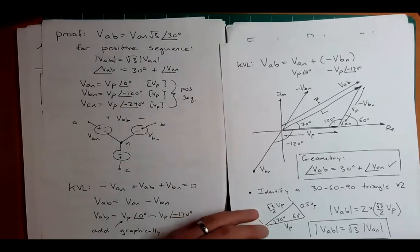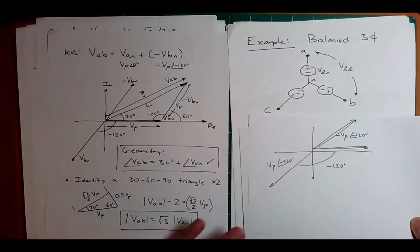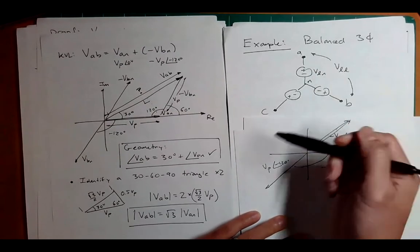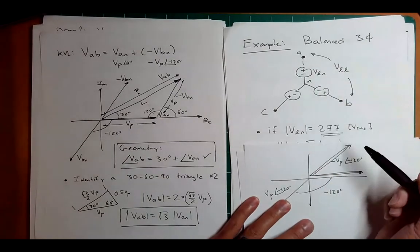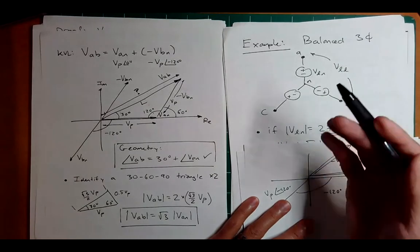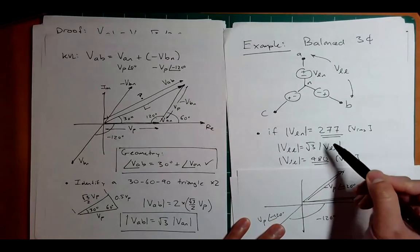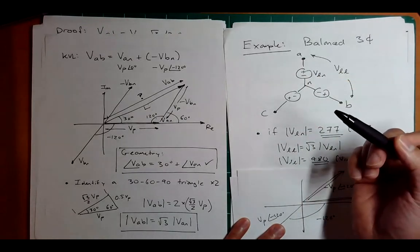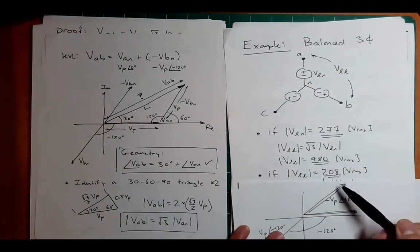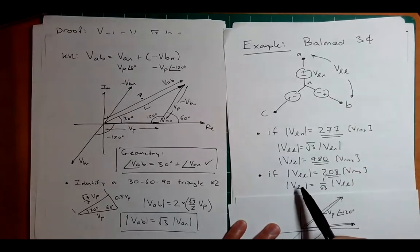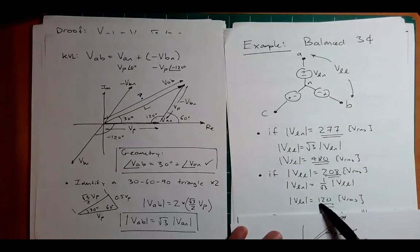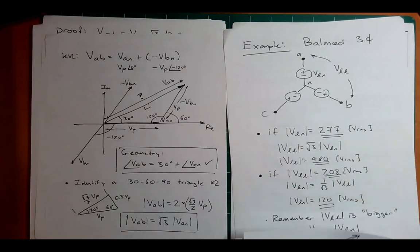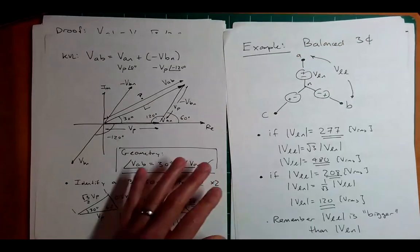The consequence of knowing this root-three relationship: if you have a line-to-neutral voltage of 277 V, you can easily calculate the line-to-line voltage — it would be root three bigger, approximately 480 V. If the line-to-line is 208 V, you do one over root three to get 120 V. So common voltages like 120, 208, 277, 480 all relate through root three. Always remember: line-to-line voltage is bigger than line-to-neutral.